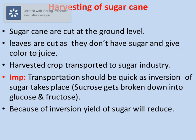An important thing about harvesting and transportation is that after harvesting, the processing should be done as quickly as possible. The reason is inversion of sugar — sucrose gets broken down into glucose and fructose — and because of this, the yield of sugar will reduce.